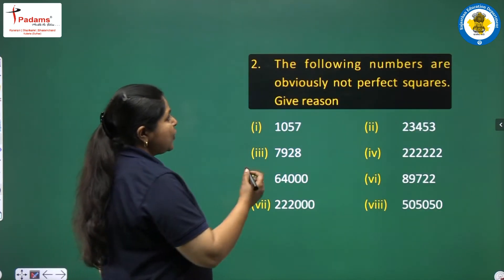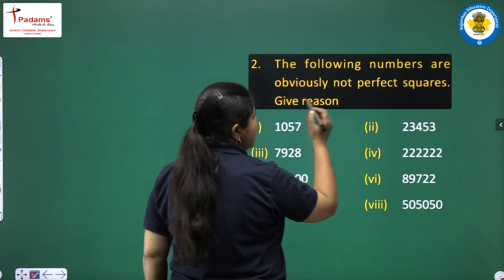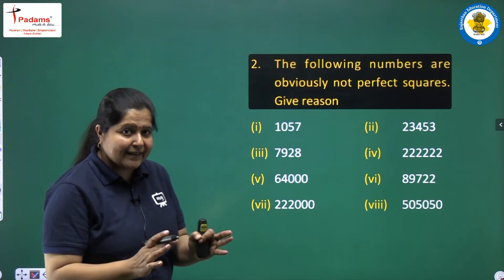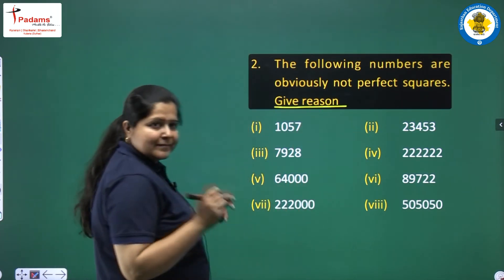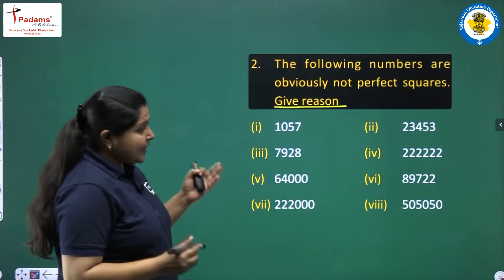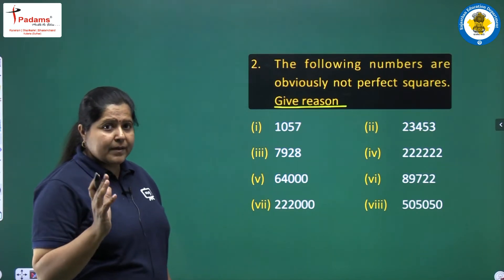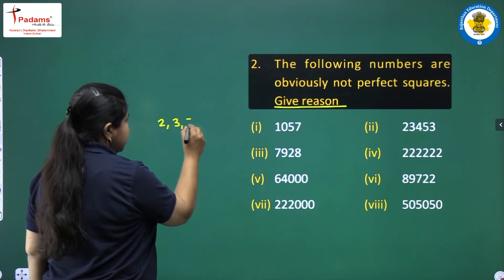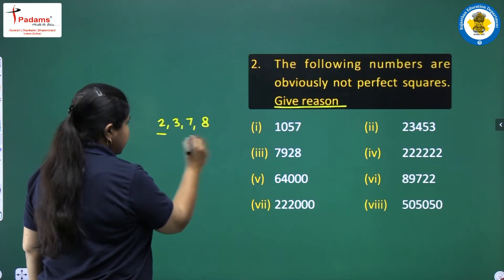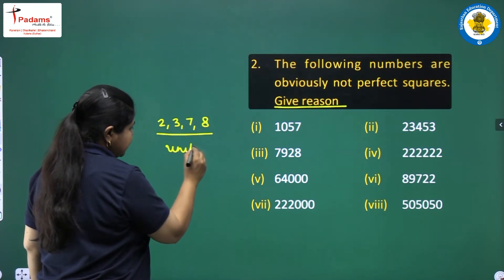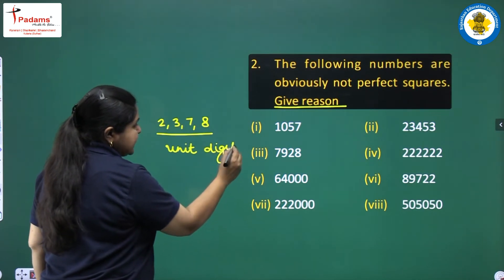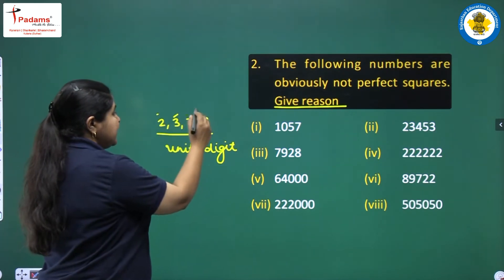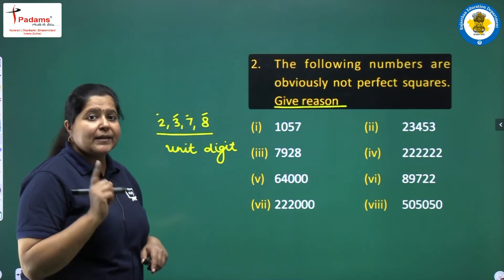We take on the second question: The following numbers are obviously not perfect squares. We simply have to give the reason. We learnt some rules — properties of square numbers. If there are 2, 3, 7, or 8 at the ones place digit, then that number is never a square number.